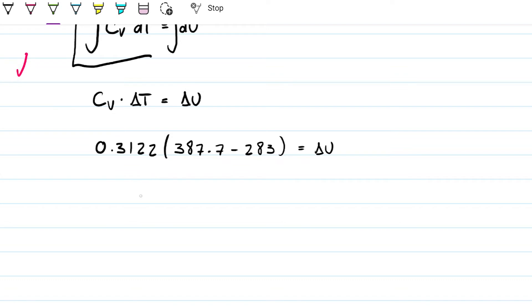Unit-wise, what we have is kilojoules per kilogram per kelvin, and I'm multiplying that by kelvin. So these go away and I'm left with kilojoules per kilogram, which is the same unit as our work. This gave me 32.69 kilojoules per kilogram.